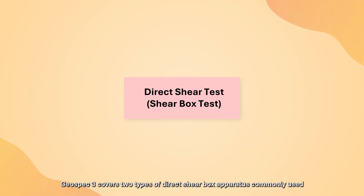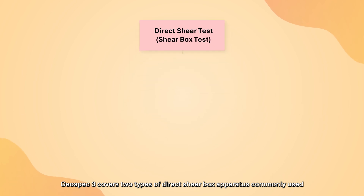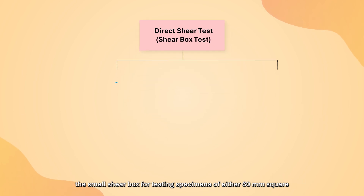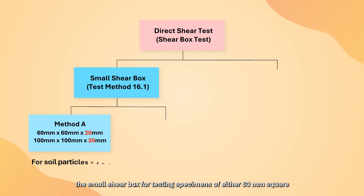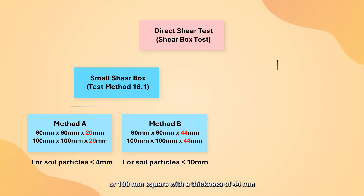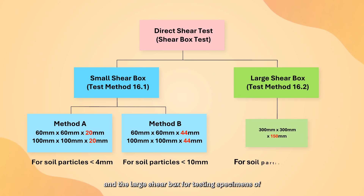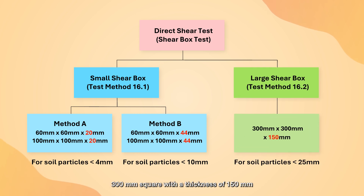GeoSpec 3 covers two types of direct shear box apparatus commonly used. A small shear box for testing specimens of either 60mm square with a thickness of 20mm or 100mm square with a thickness of 44mm, and a large shear box for testing specimens of 300mm square with a thickness of 150mm.